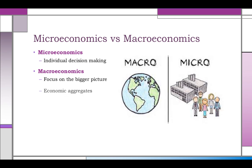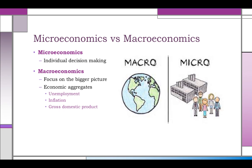In looking at the U.S. economy, we focus on three major ideas. The first is unemployment, one of the major indicators of the health of an economy. The next is inflation — the rise in the general price level. And the last is GDP, gross domestic product, or the output of a country. These are the three major factors we're going to discuss in this class.